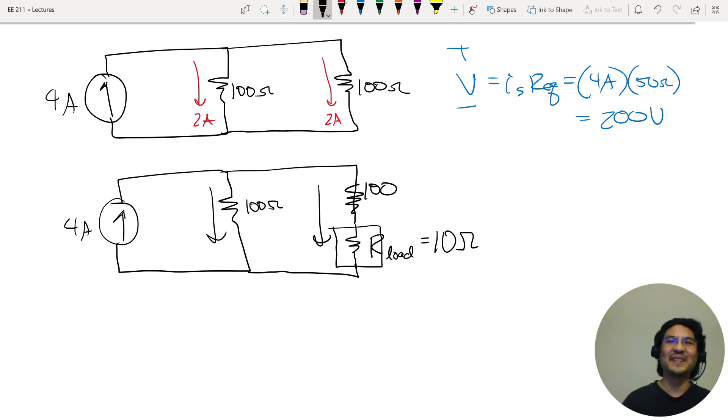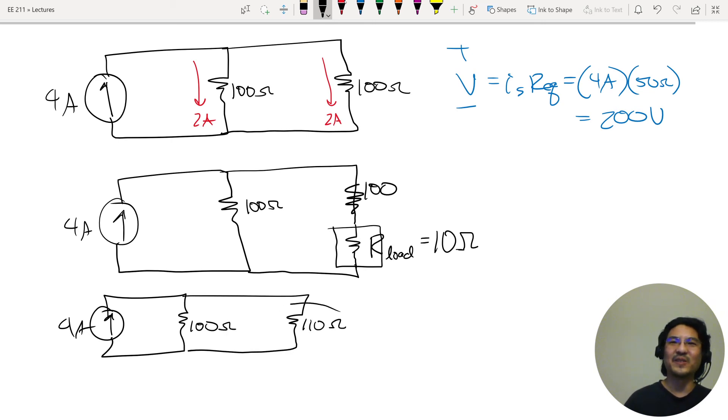Wait a minute. Not really, because this is no longer 100 and 100, right? Because I put this load in series, this is now larger than 100. In this example, 110. So the circuit looks like 100, 110. So this is now more.